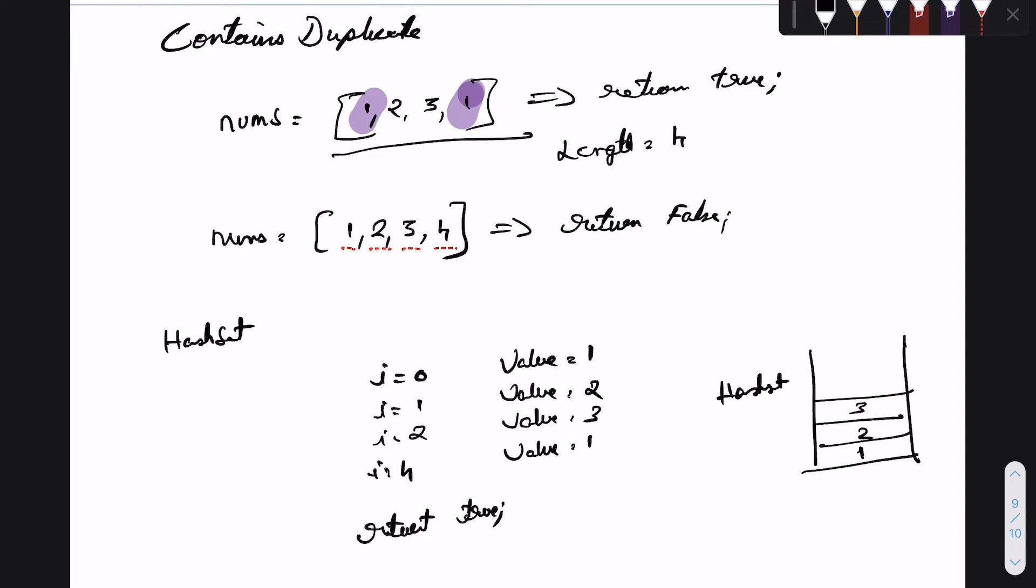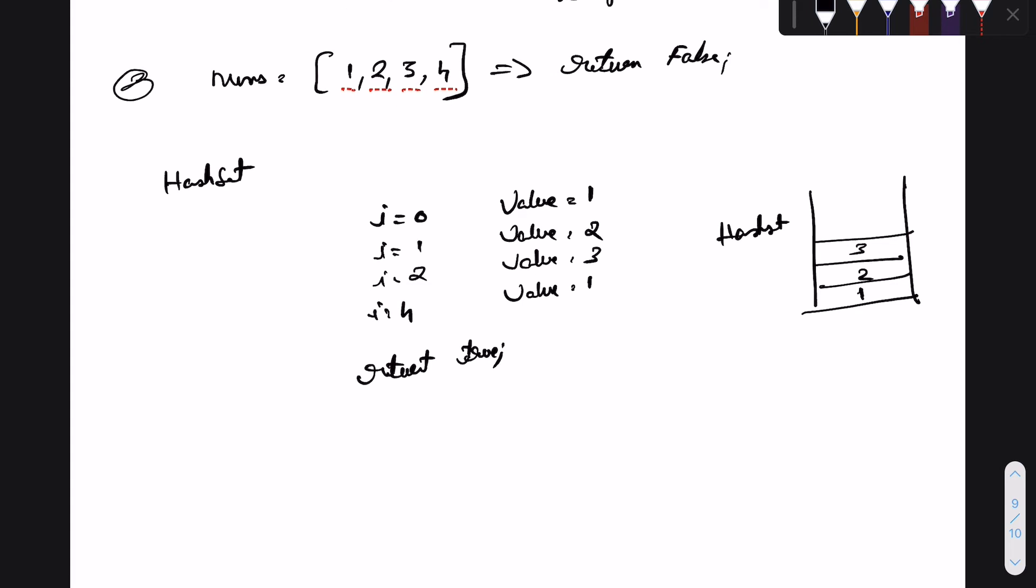Let's take a peek at the second example which is given as part of the LeetCode description. Here the array is of length n which is 4, and it has a total index of n minus 1 which is 3.